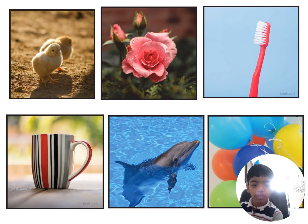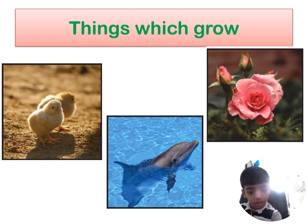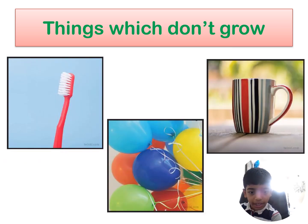Tell me which are the living things and non-living things. The living things which grow are chickens, ducks, dolphins. Things which do not grow: brush, balloons and cup.